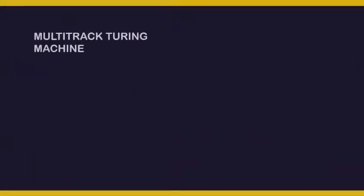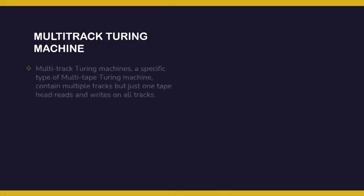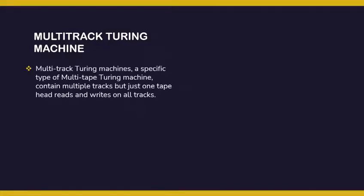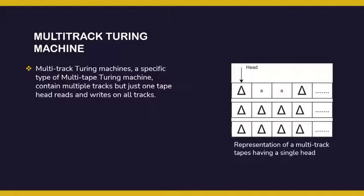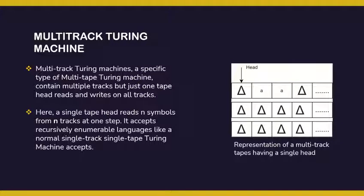First of all, what is a multiple track Turing machine? A multiple track Turing machine is a variant of a simple Turing machine, but it consists of multiple tapes with a single head pointer. As we can see here, we have multiple tracks with a single head pointer. Since we have only a single head pointer, the direction in all tracks changes together and we can read and write in all tracks at the same time.